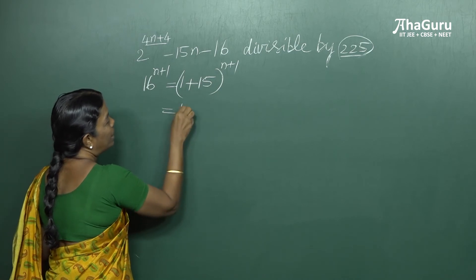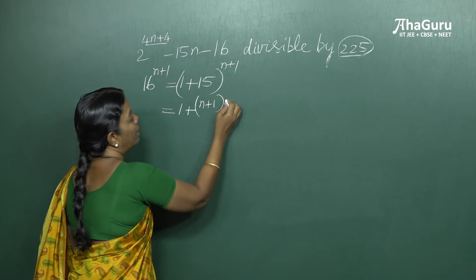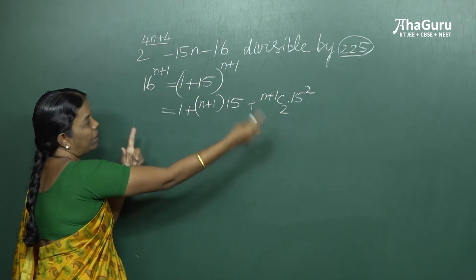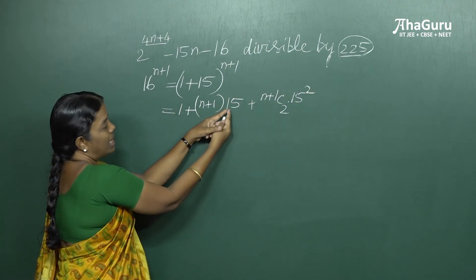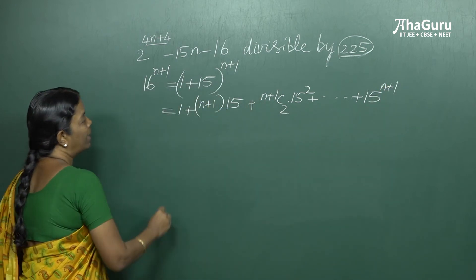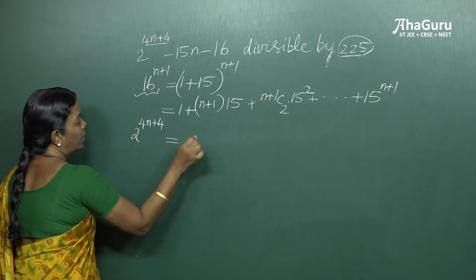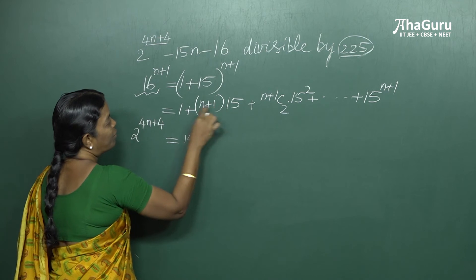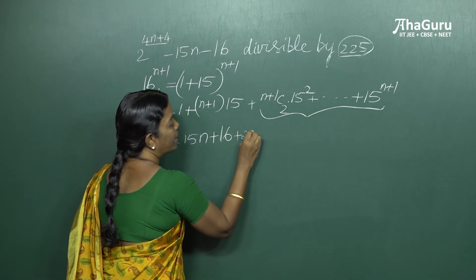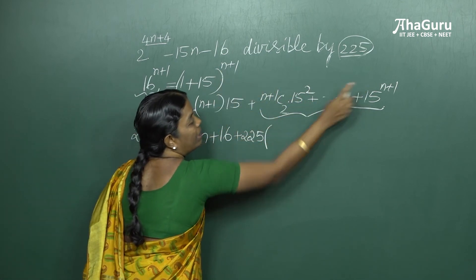So we expand (1 + 15)^(n+1) using the binomial theorem. The first term is 1. The second term is (n+1)C1 times 15, which is (n+1) times 15. Then (n+1)C2 times 15², and so on, with the last term being 15^(n+1). From all the remaining terms starting from 15², we pull out a factor of 15² — that is 225 — giving us 225 times [(n+1)C2 + (n+1)C3 times 15 + ... + 15^(n-1)].